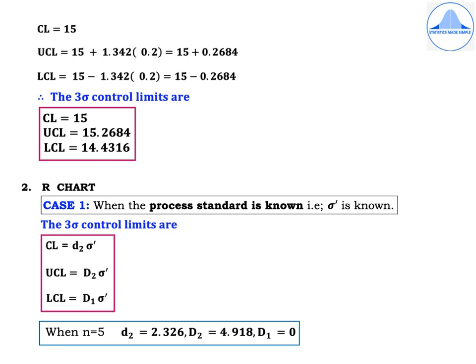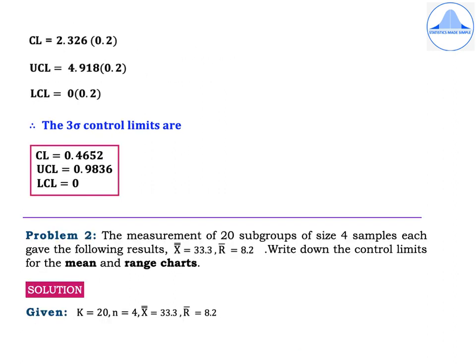For the R chart (Case 1, sigma-dash known), the three-sigma control limits are: CL = d₂·sigma-dash, UCL = D₂·sigma-dash, LCL = D₁·sigma-dash. When n = 5, lowercase d₂ = 2.326, uppercase D₂ = 4.918, D₁ = 0. Substituting: CL = 2.326 × 0.2 = 0.4652, UCL = 4.918 × 0.2 = 0.9836, LCL = 0 × 0.2 = 0.